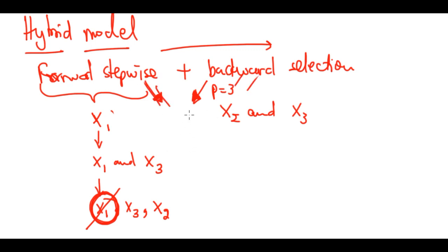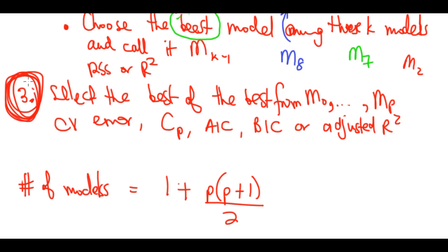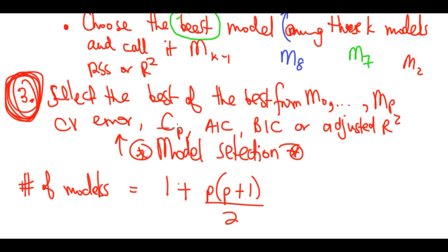The combination gives a much cleaner model which can be better than doing each individually. So those are the three stepwise methods: forward selection, backward selection, and the hybrid. Together with best subset, we've now covered all the main selection approaches. In the next video we'll cover part three — model selection — discussing how to select the best of the best using CV error, Cp, AIC, BIC, and adjusted R².